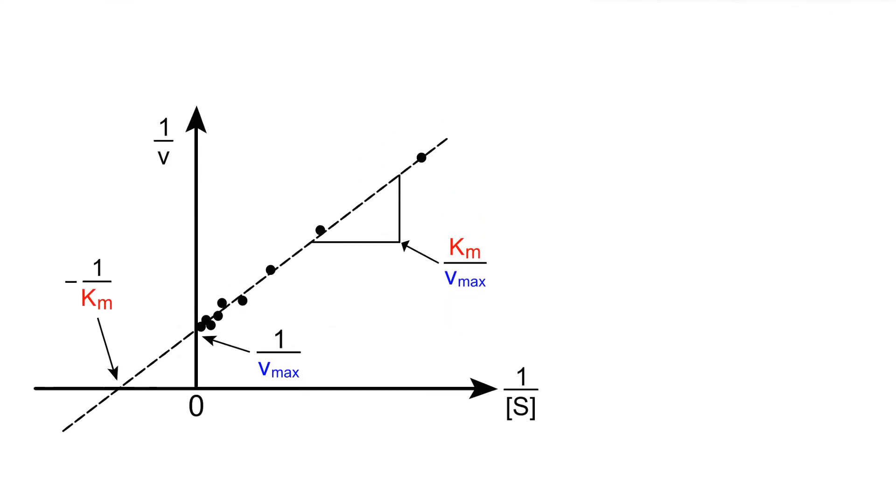On these Lineweaver-Burke plots, we're basically just plotting the same exact information, but in a different way that helps us very quickly identify what is the Km constant as well as what is our Vmax.